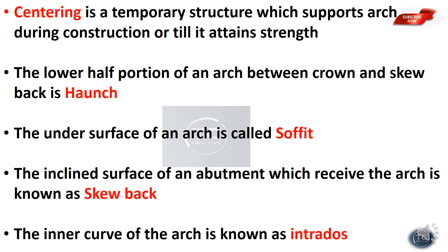The lower half portion of an arch between the crown and the skewback is called the haunch. The top part of the arch is the crown. The under surface of an arch is called soffit.